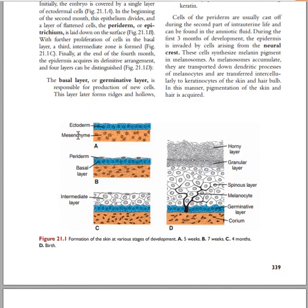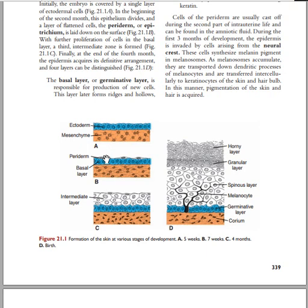We are going to start with the formation of the real stages of the skin. In skin development, the skin develops from the ectoderm and the mesoderm — the ectoderm and the mesenchyme. The ectoderm is going to produce the epidermis, and the mesenchyme is going to produce the dermis.